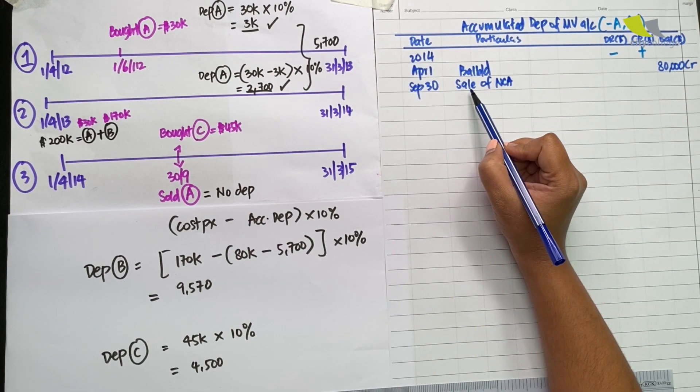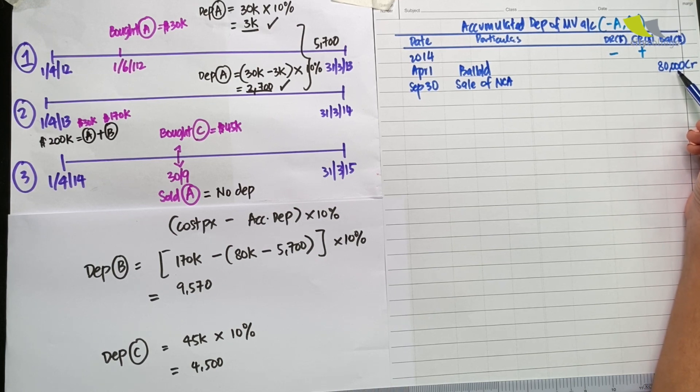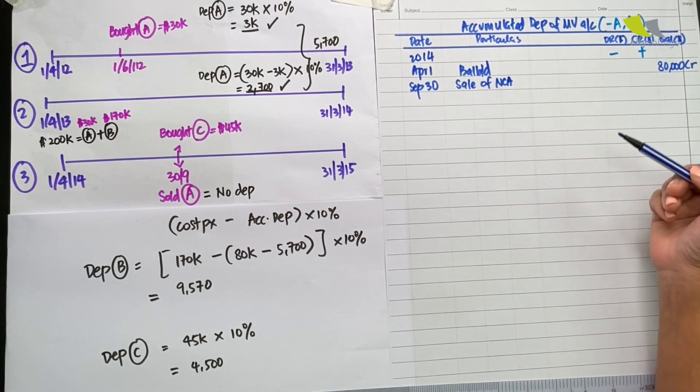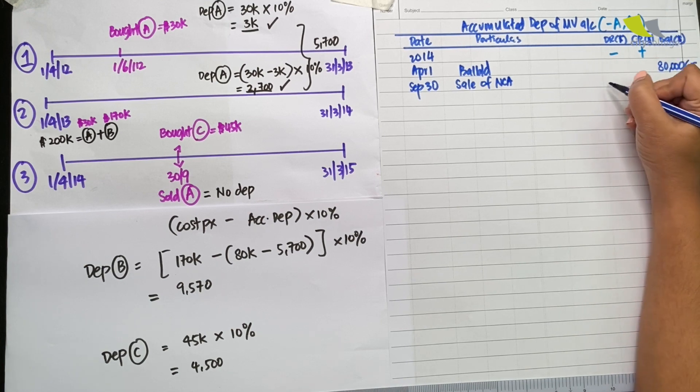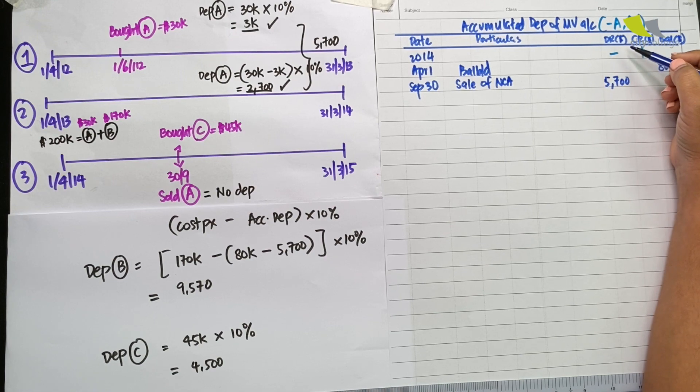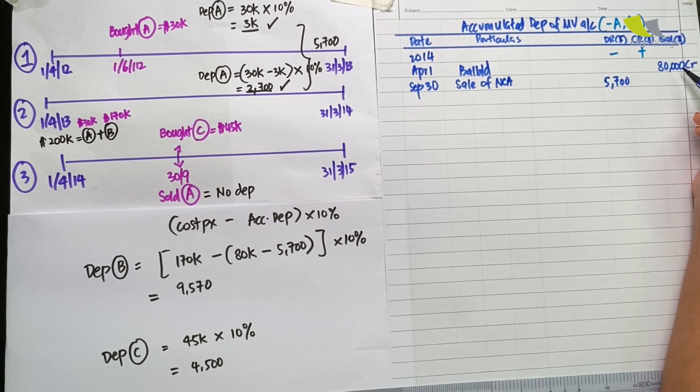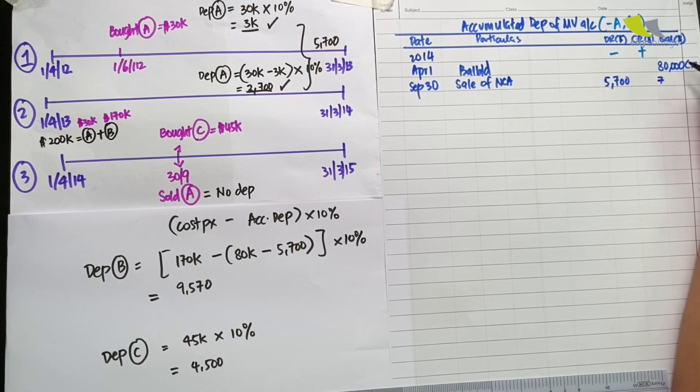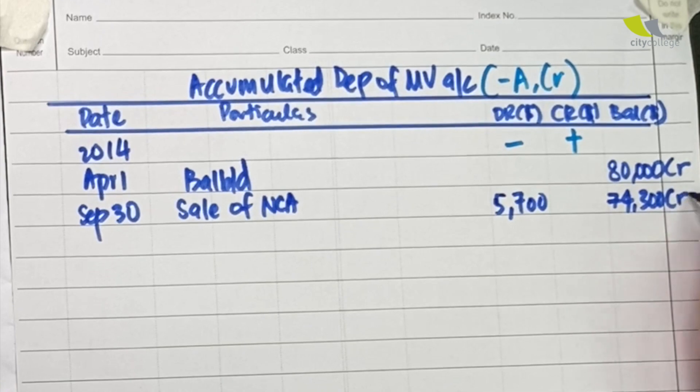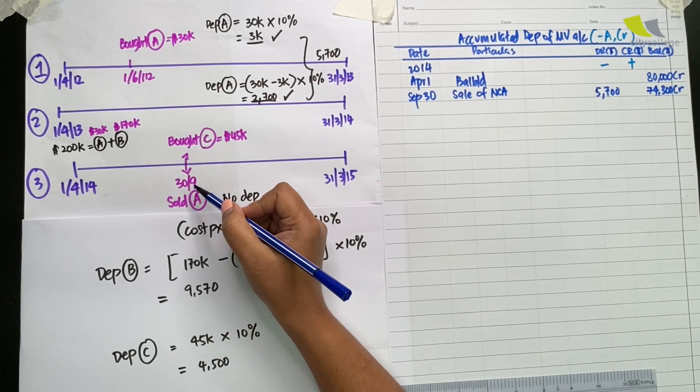This asset that we are selling, we have to remove the accumulated depreciation from the 80,000 balance. Why are we removing? Because we have sold it away. To remove is to deduct, and therefore we place the 5,700 on the reducing column, the minus column. Because we have sold A, we have to remove the 5,700 from the 80,000. The new balance will then be 74,300, still a positive credit balance. We finished with September 30th.